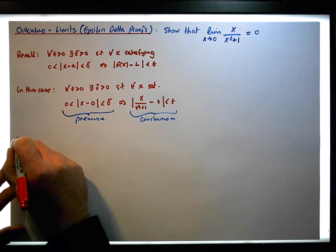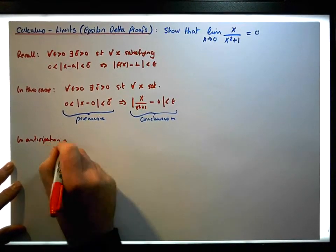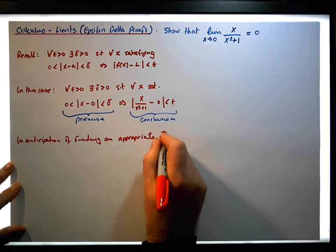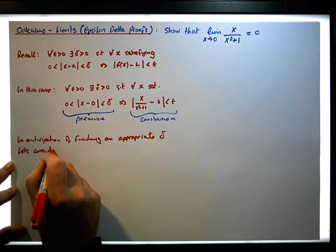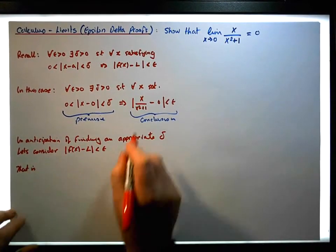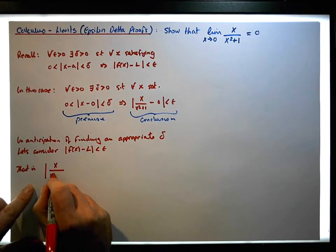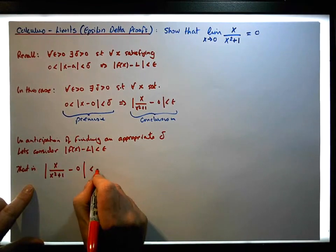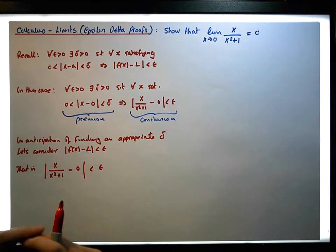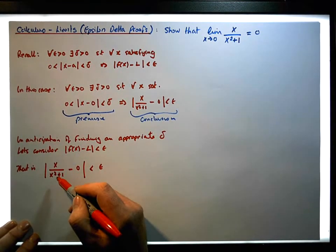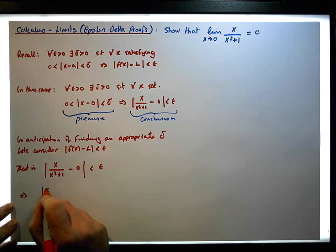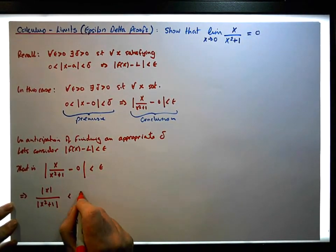So in anticipation of finding an appropriate delta, let's consider the absolute value of f(x) minus L less than epsilon. That is, we're considering the absolute value of x over x squared plus 1 minus 0, which is less than epsilon. This reduces down to the absolute value of x over x squared plus 1. The absolute value of a quotient is the same as the quotient of the individual absolute values, so this implies that the absolute value of x over the absolute value of x squared plus 1 must be less than epsilon.